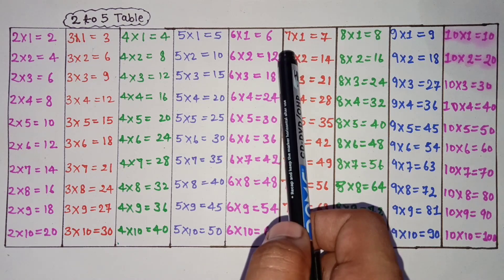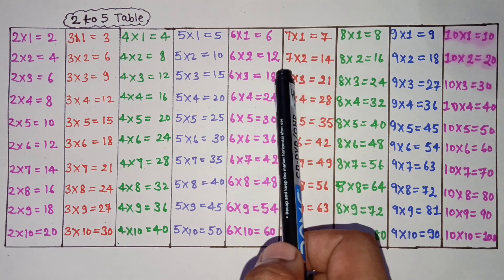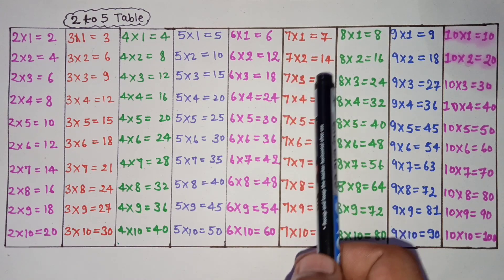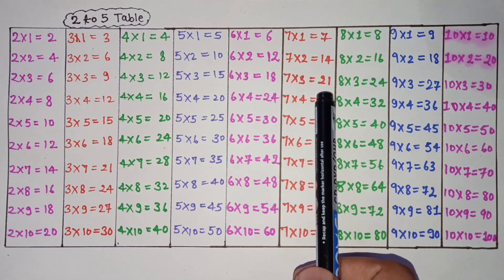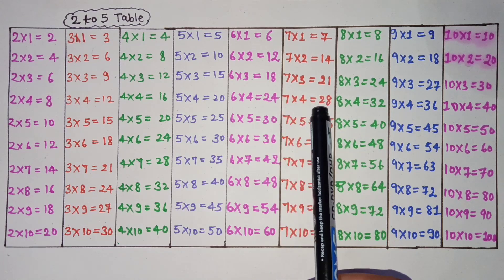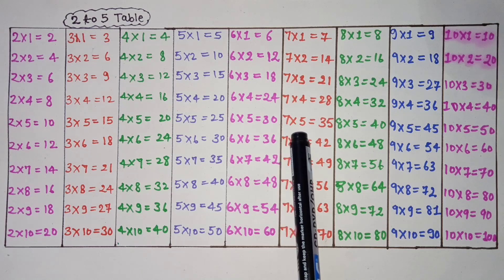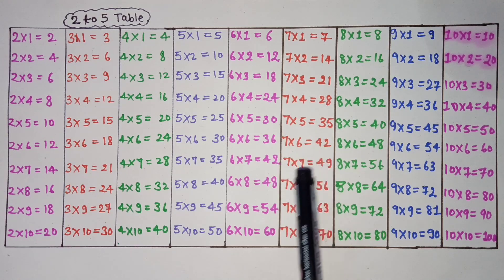7 ones are 7, 7 2s are 14, 7 3s are 21, 7 4s are 28, 7 5s are 35, 7 6s are 42.